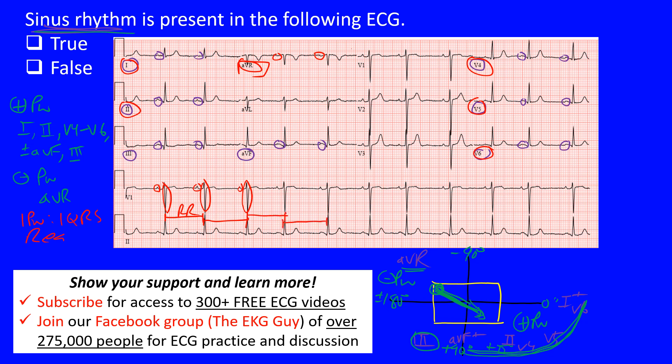A regular interval is expected, and the rate determines whether it's normal, bradycardic, or tachycardic. In adults, normal rate is 60–100 beats per minute; over 100 is tachycardia, under 60 is bradycardia. However, the 1:1 P-to-QRS ratio and regularity are not always required — you can have an AV block with sinus rhythm still present, which can cause irregular rhythm due to dropped beats.